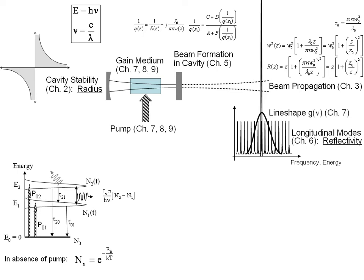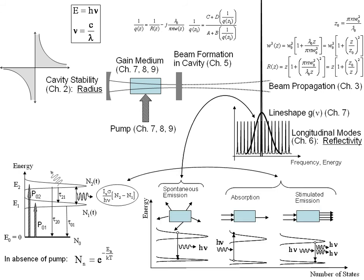We know that the cavity combined with the gain is going to give a line shape of fluorescence and a very narrow line shape of laser operation that's much narrower than one of the longitudinal modes.